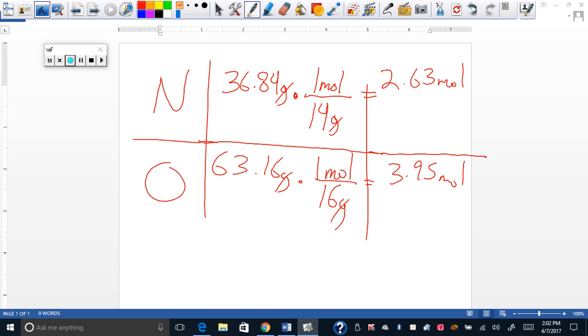Now, how do we get rid of these moles? We're going to divide by something. What are we going to divide by? Yeah, the least common denominator. Okay. 2.63 moles.